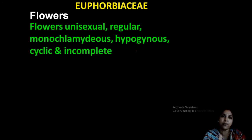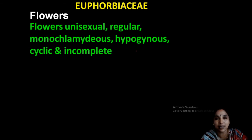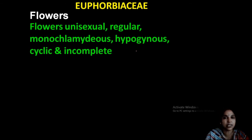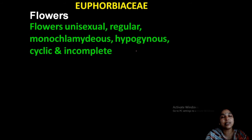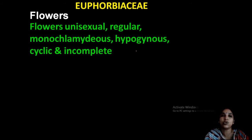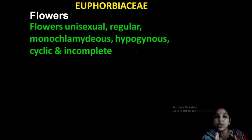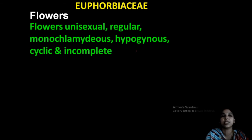So you can see various types of inflorescence. The very important special type is cyathium. Then catkin, simple raceme, panicle, and dichasial cyme are also present. These inflorescence types in Euphorbiaceae are a very important topic to discuss.